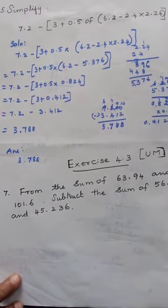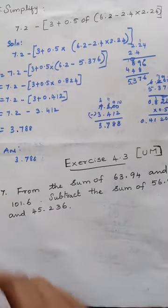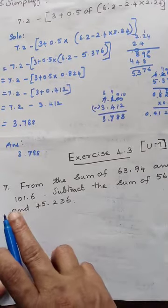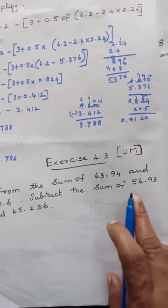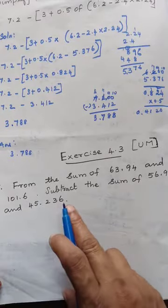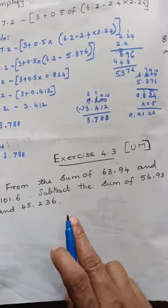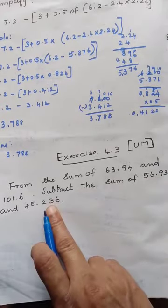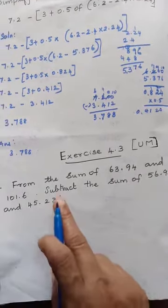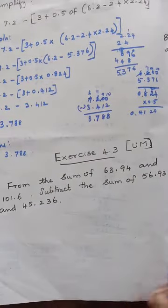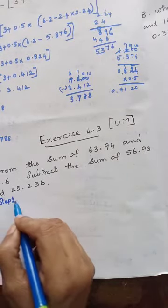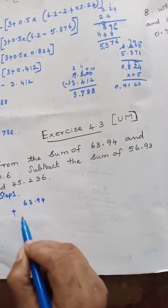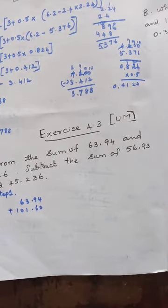Now we move to Exercise 4.3, Problem 7: From the sum of 63.94 and 101.6, subtract the sum of 56.93 and 45.236. First you find the sum of the first two, then the sum of the other two, and then subtract both answers.